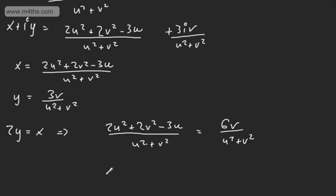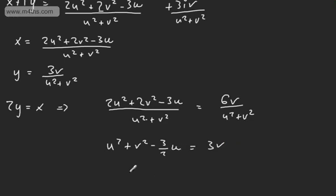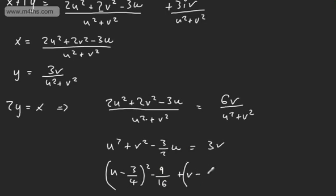Dividing through by 2: U squared plus V squared minus 3 over 2 times U equals 3V. Bringing the 3V over to this side and completing the square: U minus 3 over 4, squared, gives minus 9 over 16. Plus V minus 3 over 2, squared, gives minus 36 over 16. That's all equal to 0.